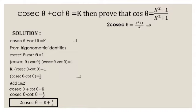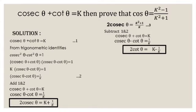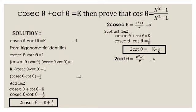Now subtract equation 2 from equation 1. We get 2 cot theta is equal to k minus 1 by k.